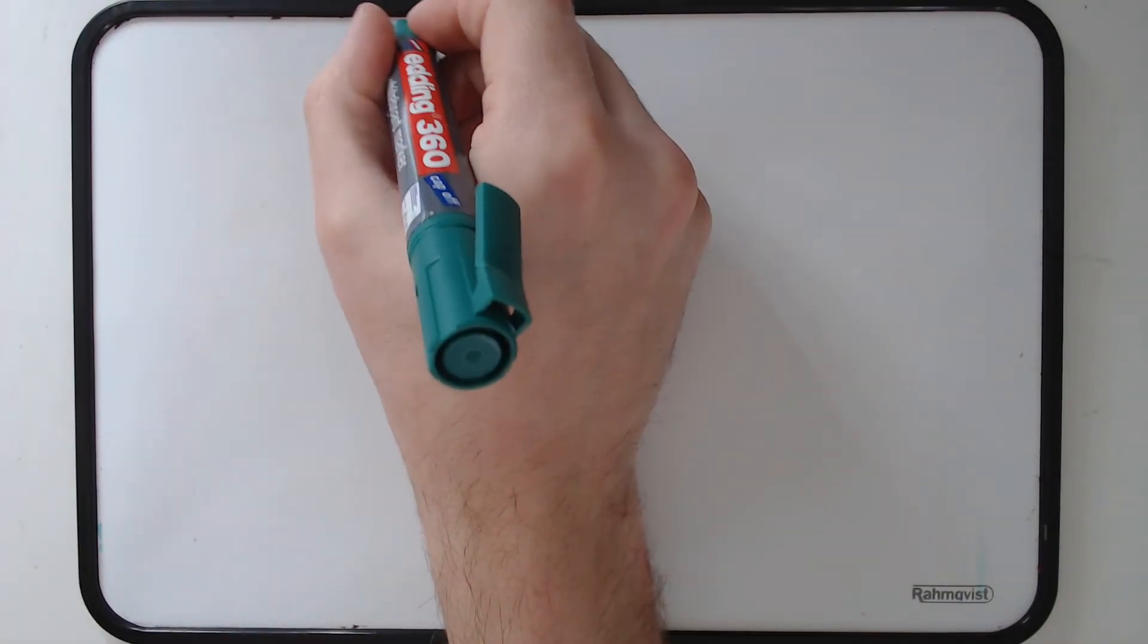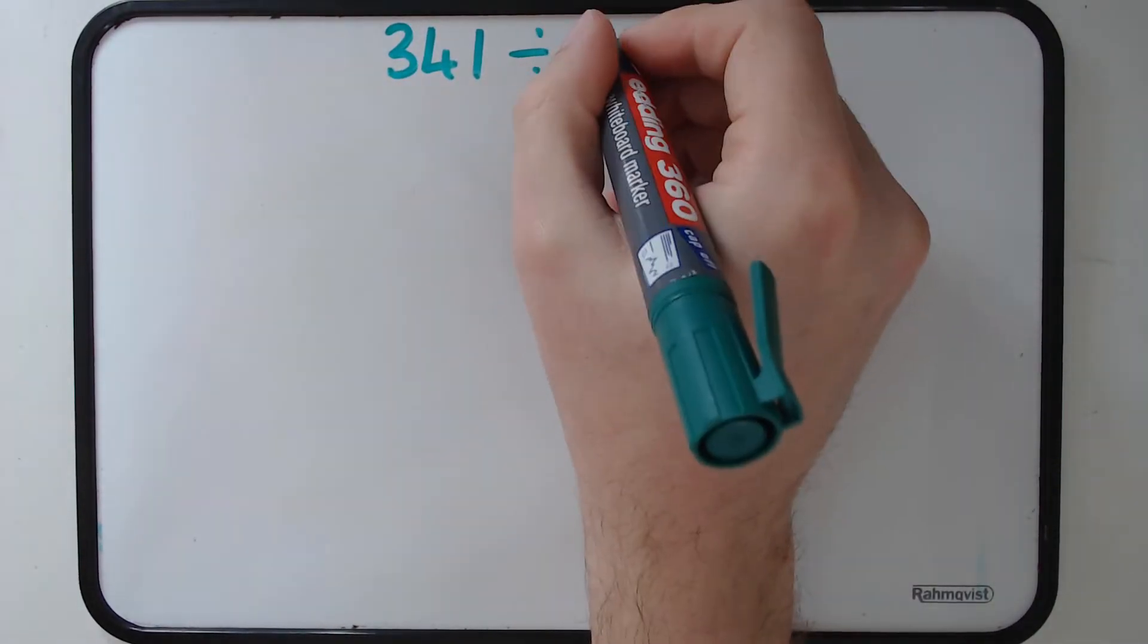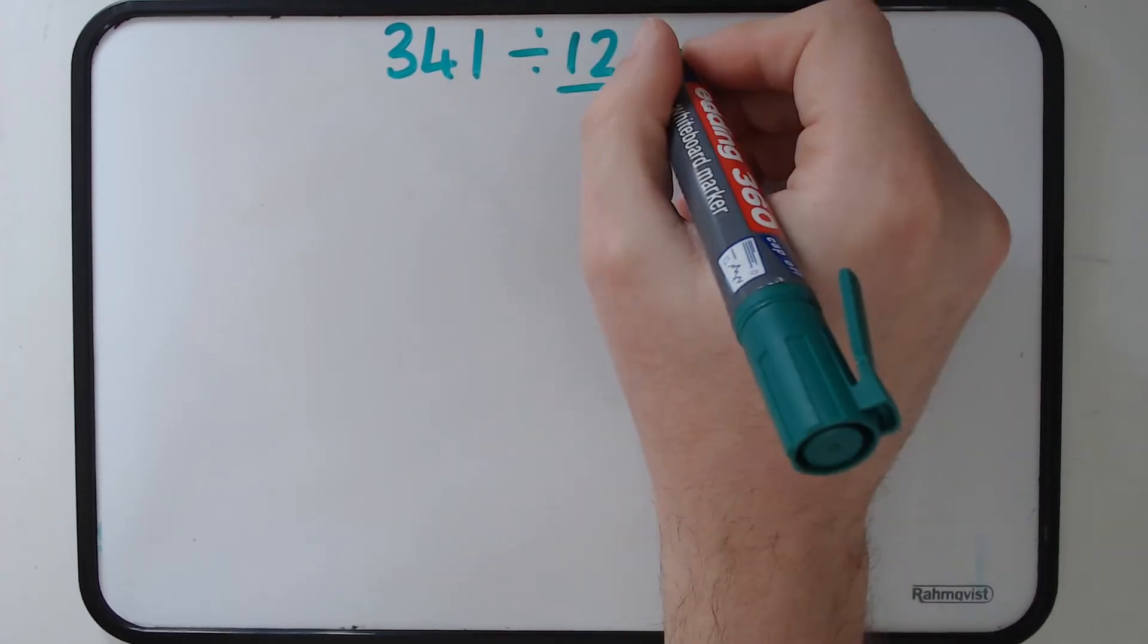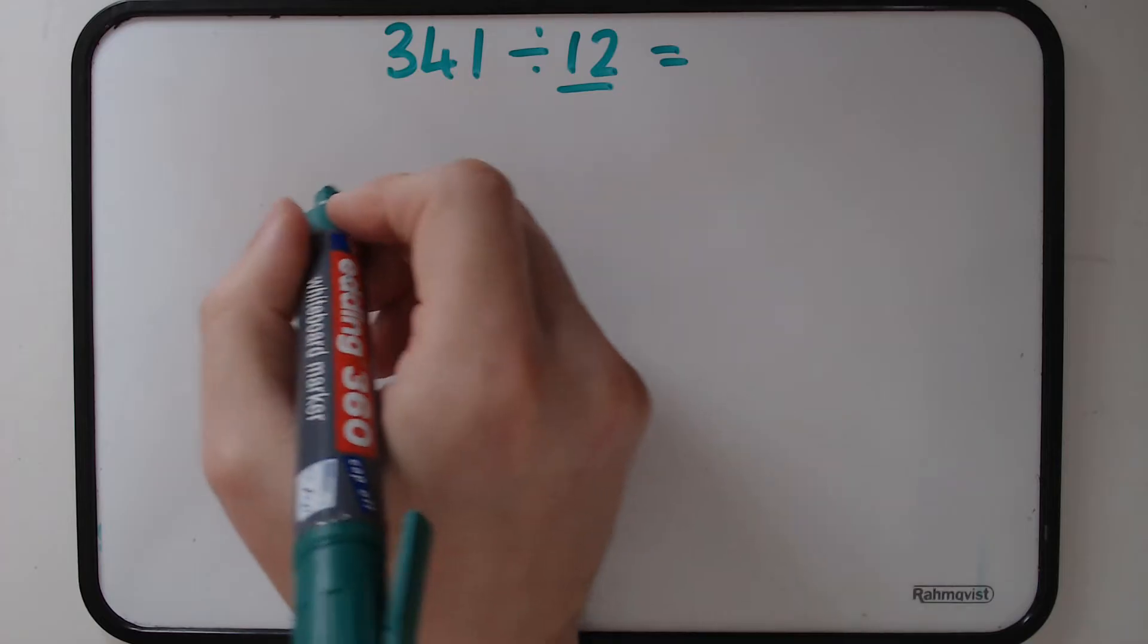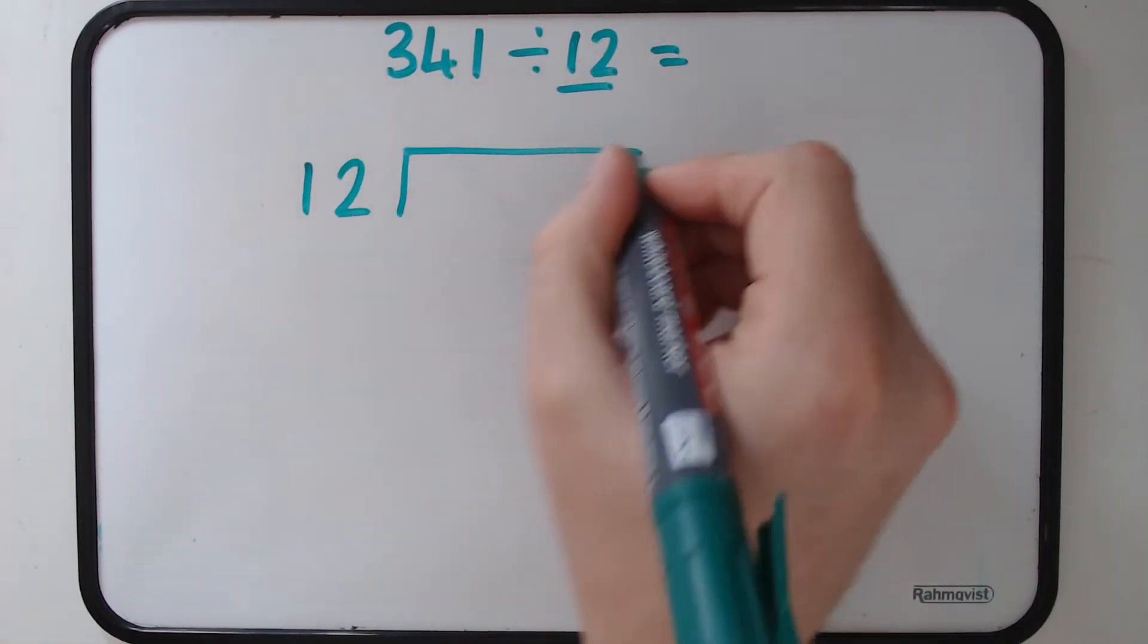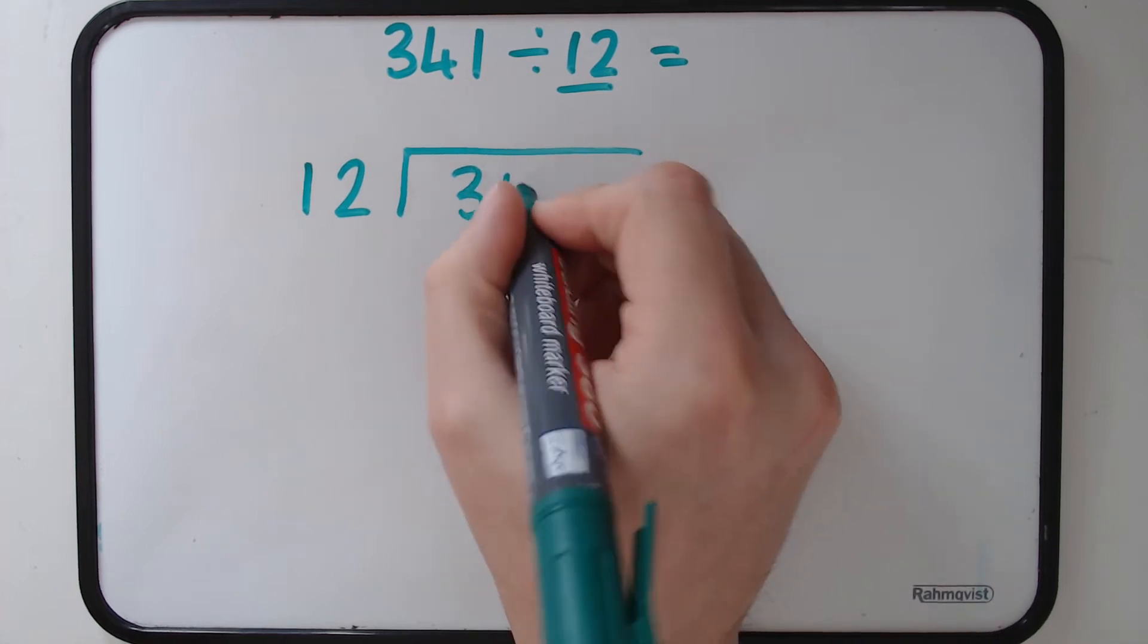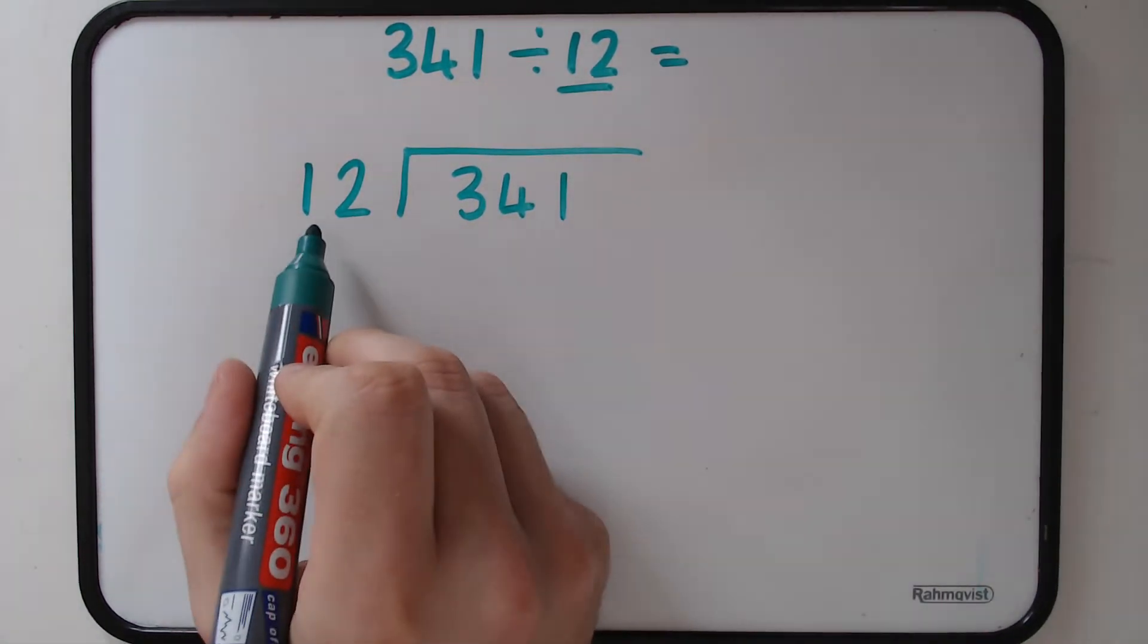For the next example we're going to divide by a two digit number. In this case we're going to divide by 12 as lots of children are familiar with their 12 times table. So our question is going to be 341 divided by 12. Set it out exactly the same way. 12 on the outside, 341 on the inside.